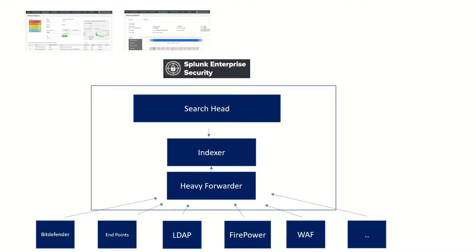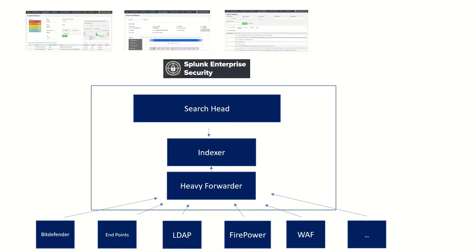All incidents happening in your system will appear in Incident Review. Another feature is Asset Investigation, where you can go asset by asset and see the risk of that asset — whether it is up to date, whether patches are required, and so on. Next is Threat Artifacts, another dashboard where you can see threat artifacts and configure threat intelligence data, as there are many threat intelligence data sources available on the internet that you need to configure and add to your system.